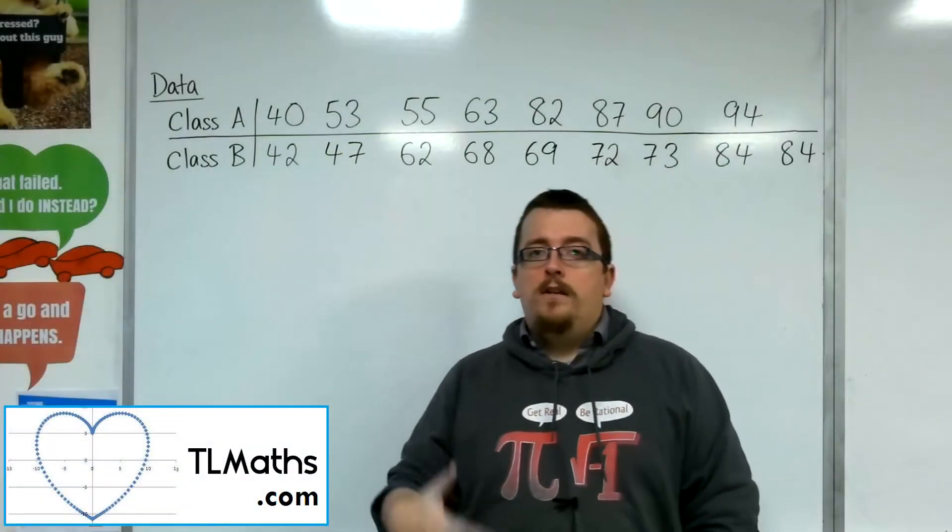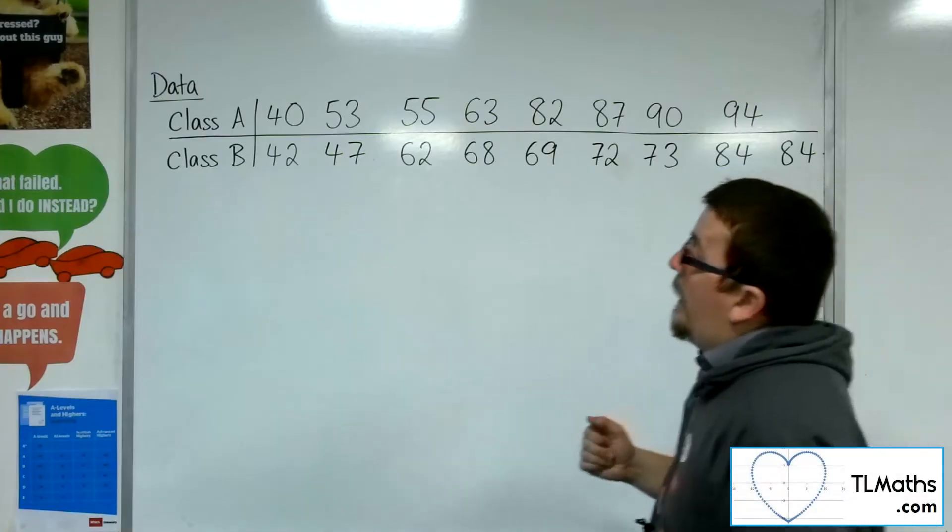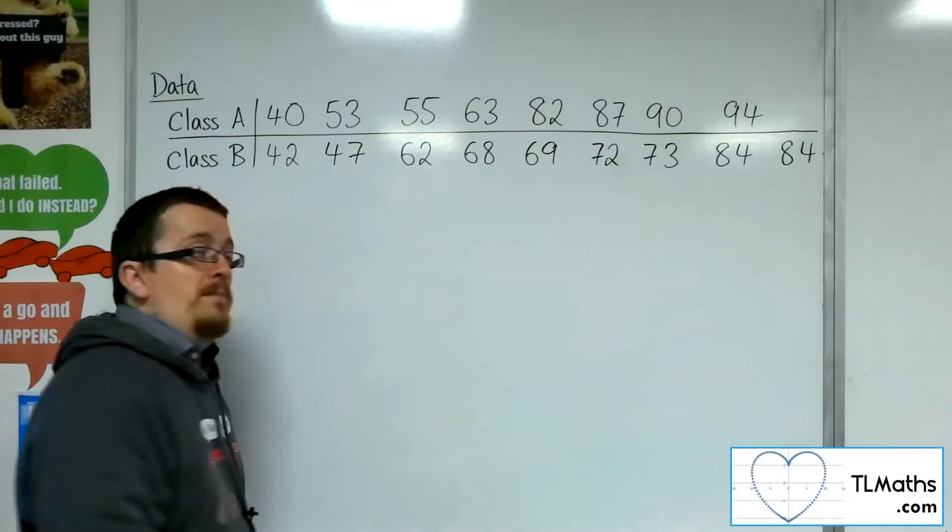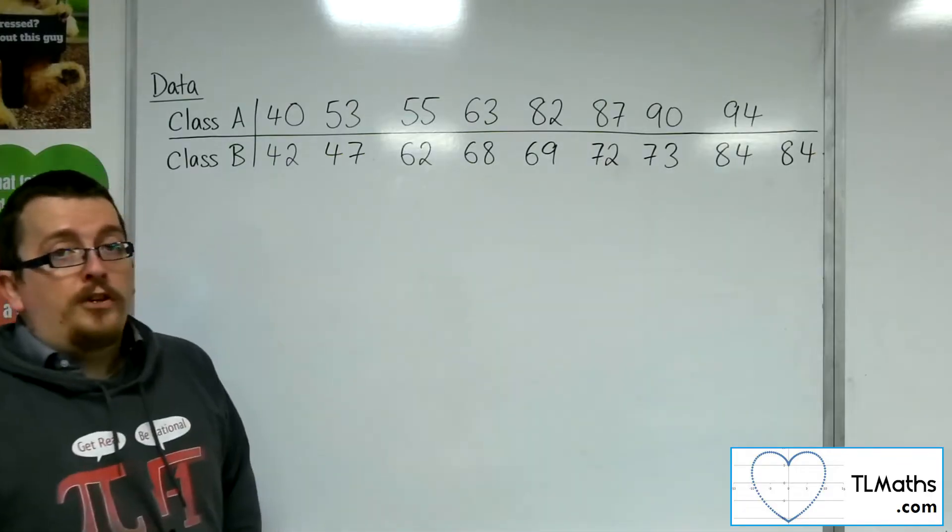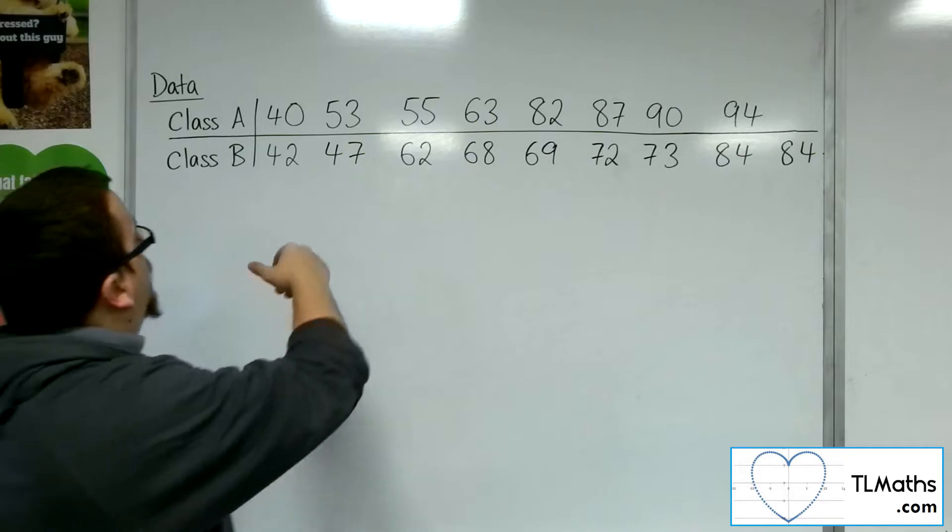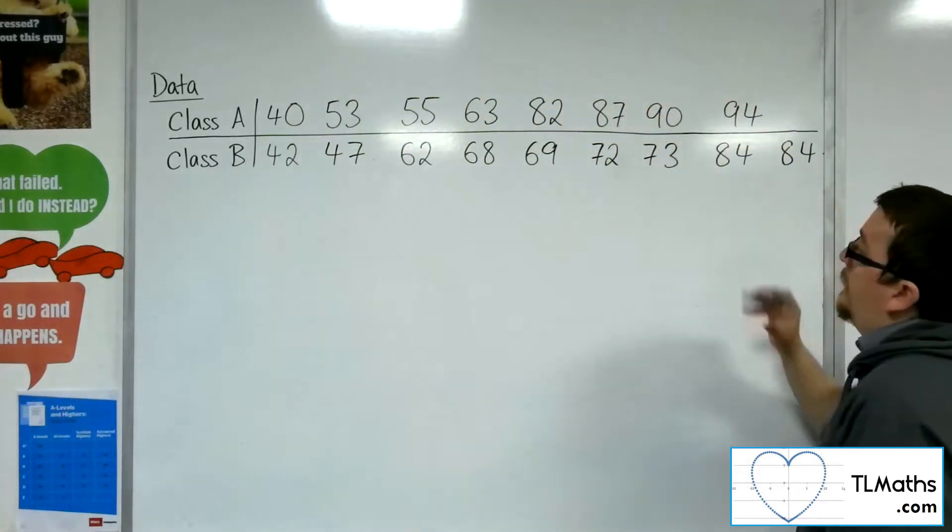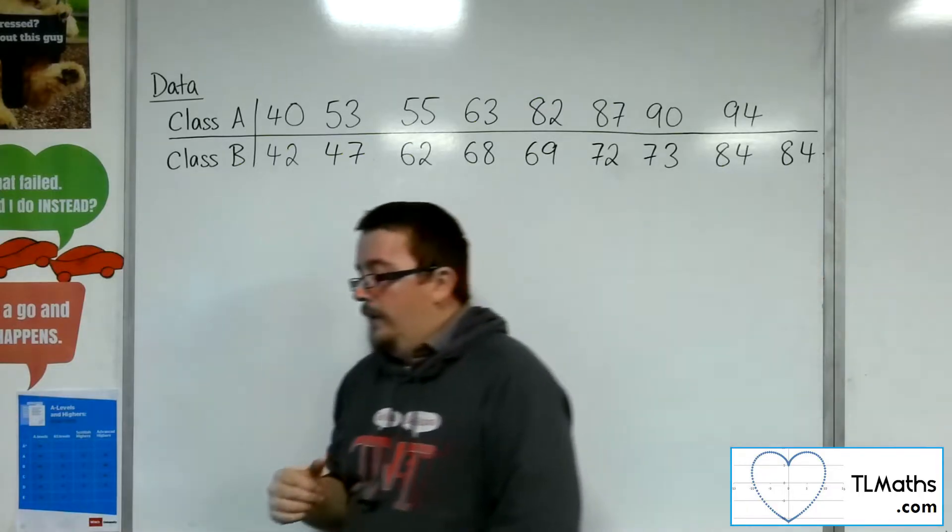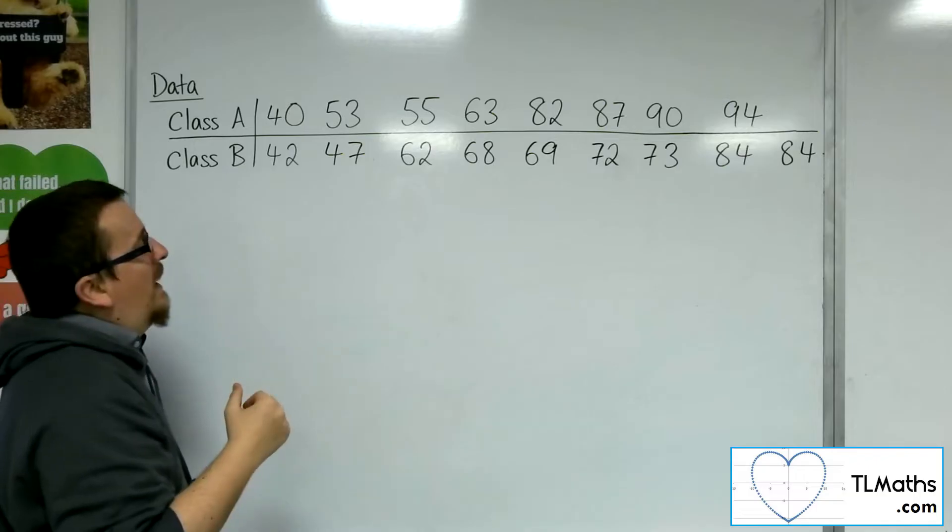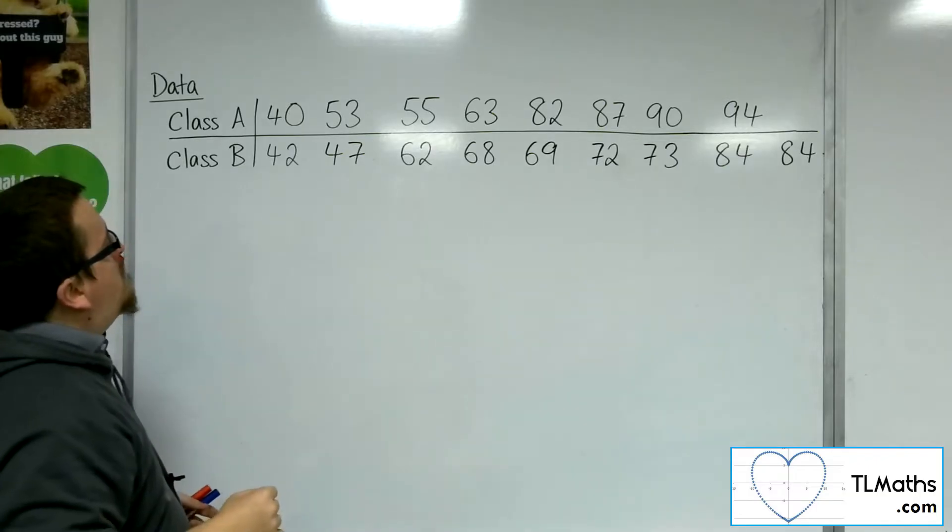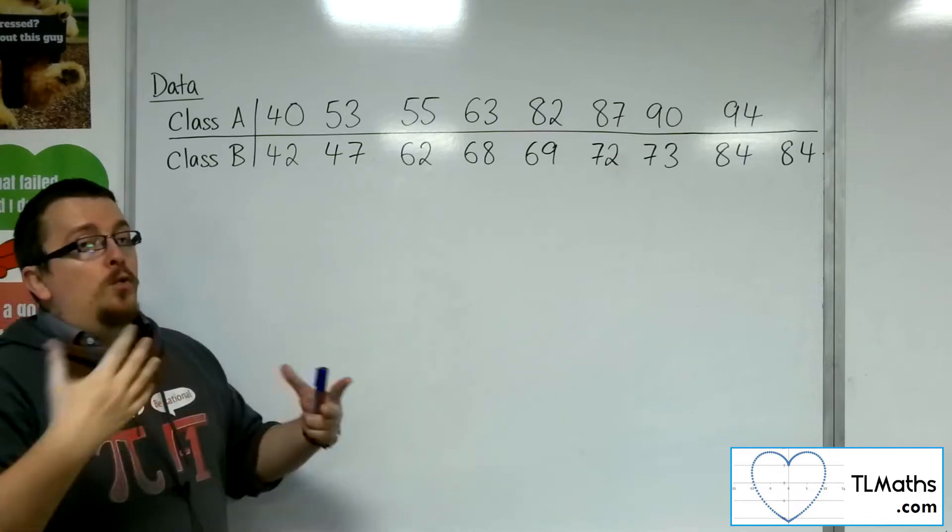So let's say you've got two classes of students that have just sat a test. They've sat the same test, and these are their percentage scores. So your first class has one, two, three, four, five, six, seven, eight people in it, and the second class has nine people in it, which would sound brilliant, but not always the case. So with those class sets of data, you want to compare them.